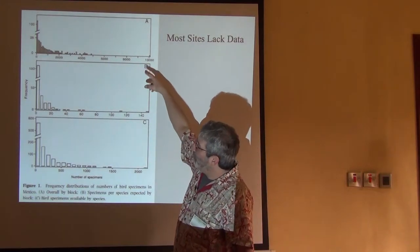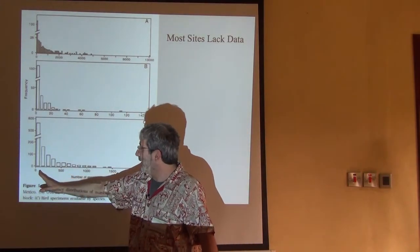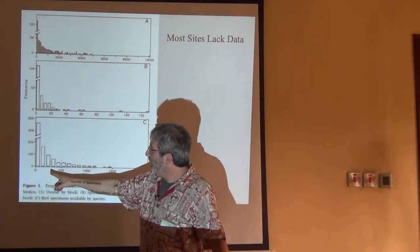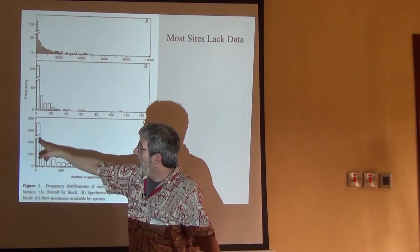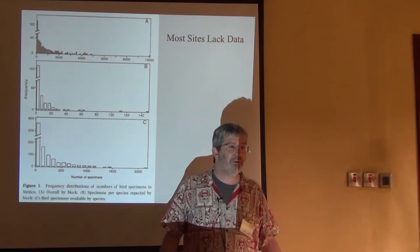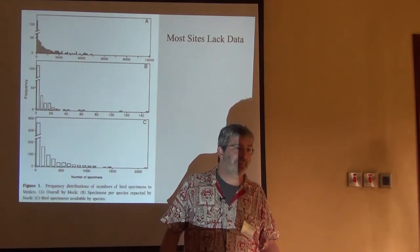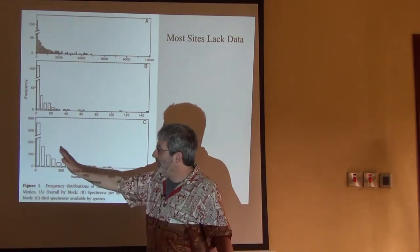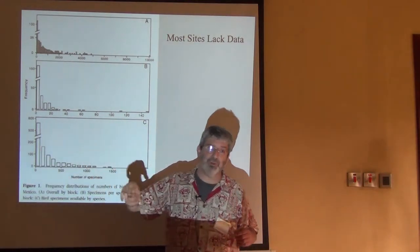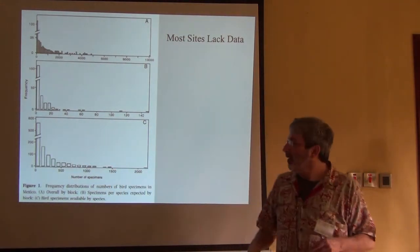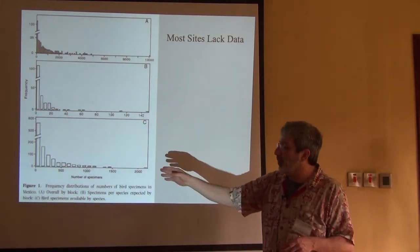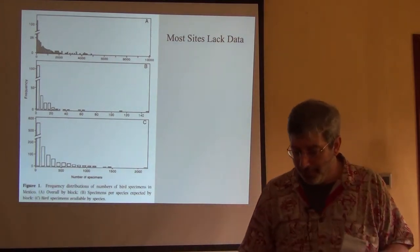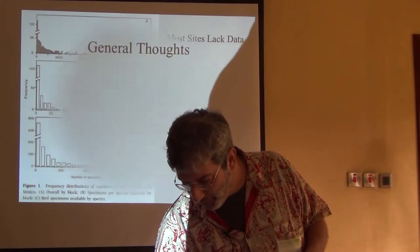This shows three different measures of degree of inventory, and you can see in all cases - these are frequency diagrams - the highest category by far is zero. For Mexican birds, most of the blocks have not been surveyed at all. And that is common.